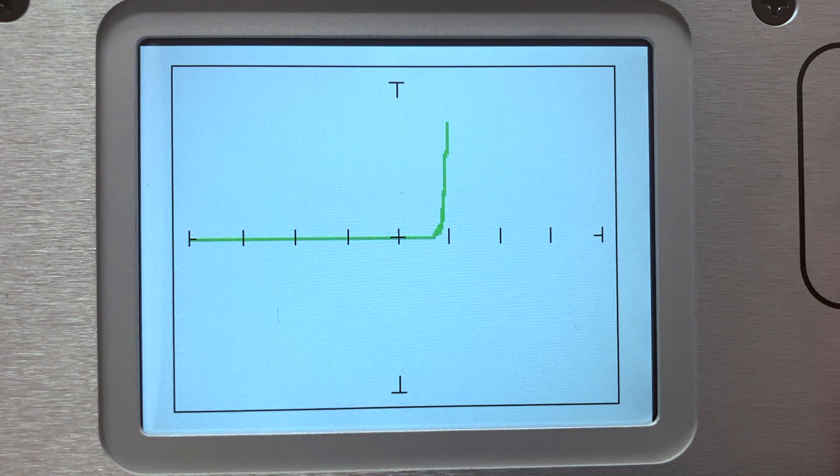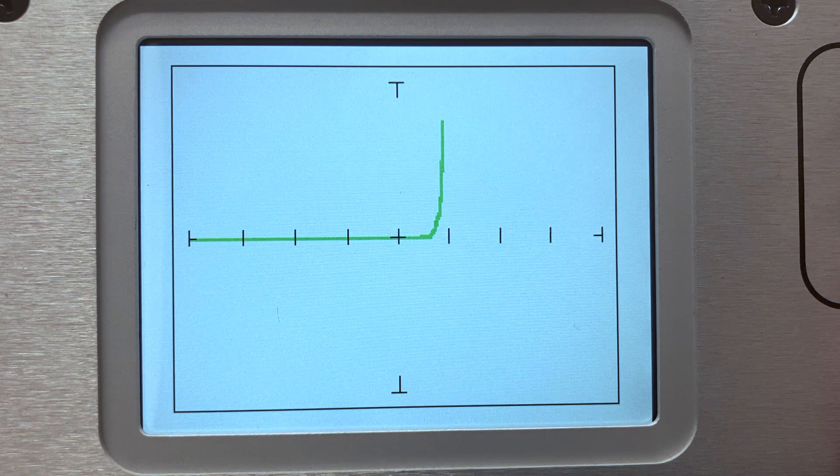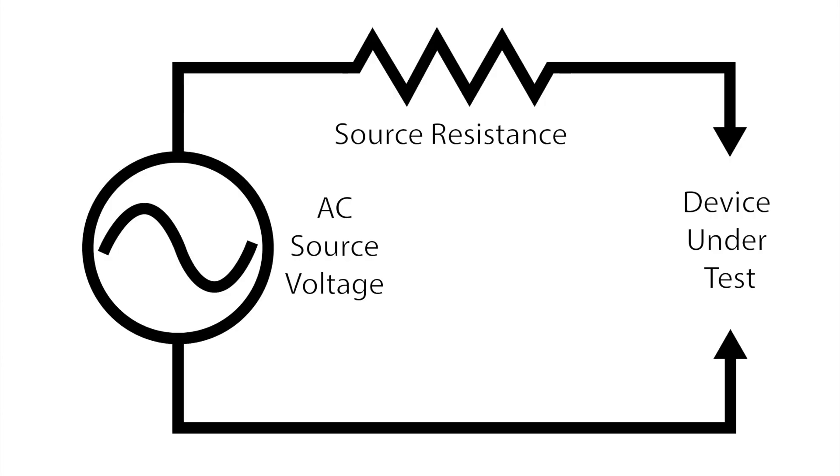An analog signature is a representation of voltage versus current and is sometimes referred to as a VI trace. It is generated by applying a sine wave voltage through an internal source resistance to a component on a circuit board.